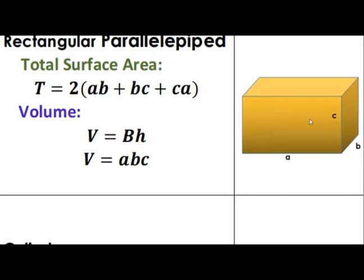Let's take the case of a rectangular parallelepiped. A parallelepiped is a prism that has parallelograms for its faces. The rectangular prism and the cube are actually specific cases of a parallelepiped. The illustration here is particularly a rectangular prism. With sides A, B, and C, we can compute the total surface area by adding the six surface areas. Note that there are three pairs of opposite faces.